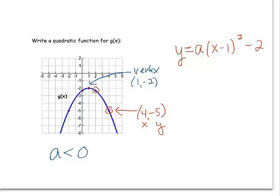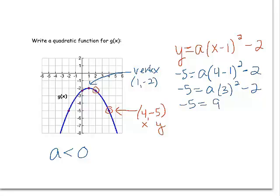Here we go. Y is negative five, we're looking for a, and x is four. Here we go, solving for a. Inside the parentheses, four minus one is three. I'm going to square three to get nine.